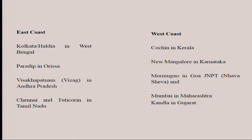In the eastern part of India: Kolkata in West Bengal, Paradip in Orissa, Visakhapatnam in Andhra Pradesh, Chennai and Tuticorin in Tamil Nadu. In the western part of India: Cochin in Kerala, New Mangalore in Karnataka, Mormugao port, JNPT in Goa, Mumbai in Maharashtra, and Kandla in Gujarat. These are all the major port coastlines for India — east as well as west coast of the country.